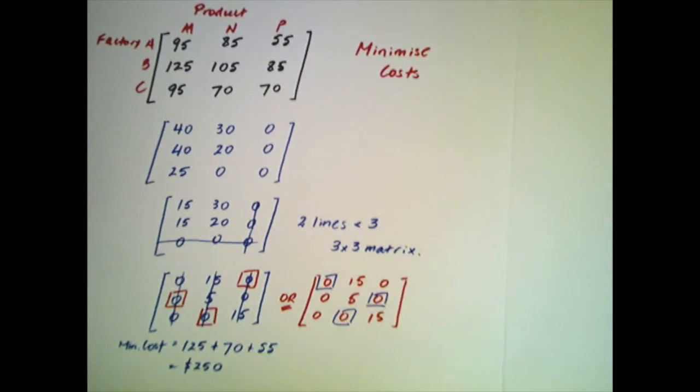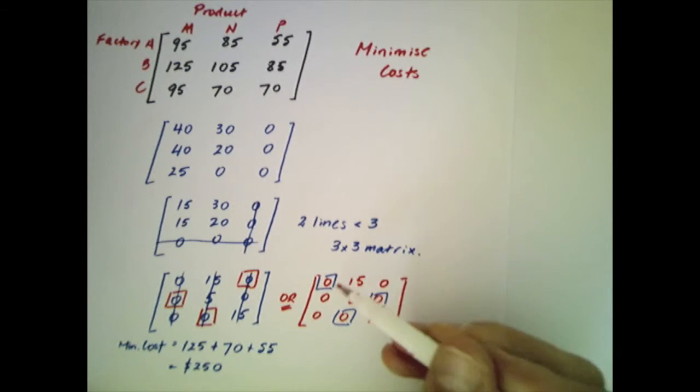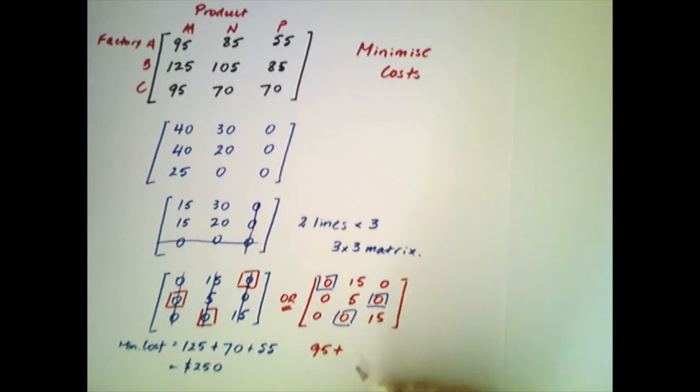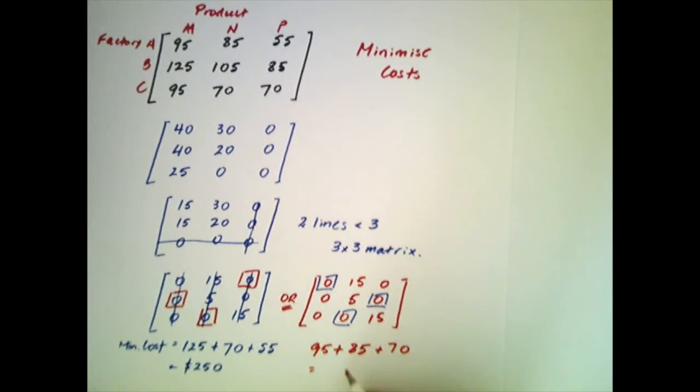Now let's check for our second matrix. We've got a zero in the top left hand corner and that matches 95. We've got a zero in the last entry of the second row and that matches 85. And we've got a zero in the middle of the last row which matches 70. So when we add those amounts together we get $250.